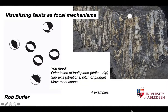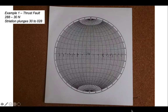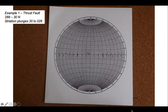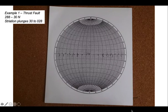We're going to do this using four examples, so let's look at these in turn. Example 1 is a thrust fault with a strike of 288, a dip of 30 degrees north, and striations that plunge 30 degrees towards a direction of 028. The first thing we're going to do is plot these data.